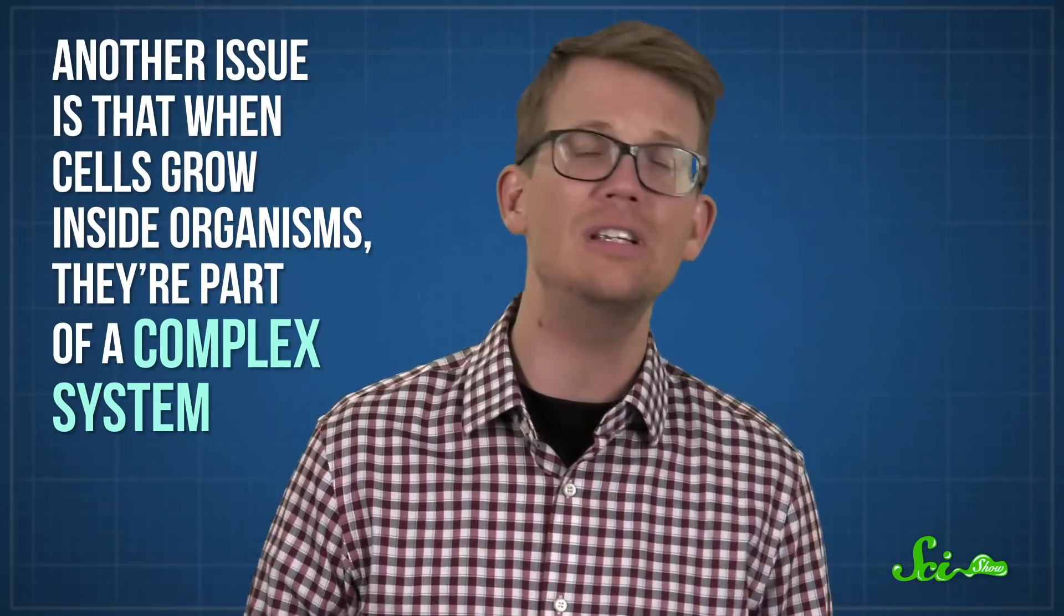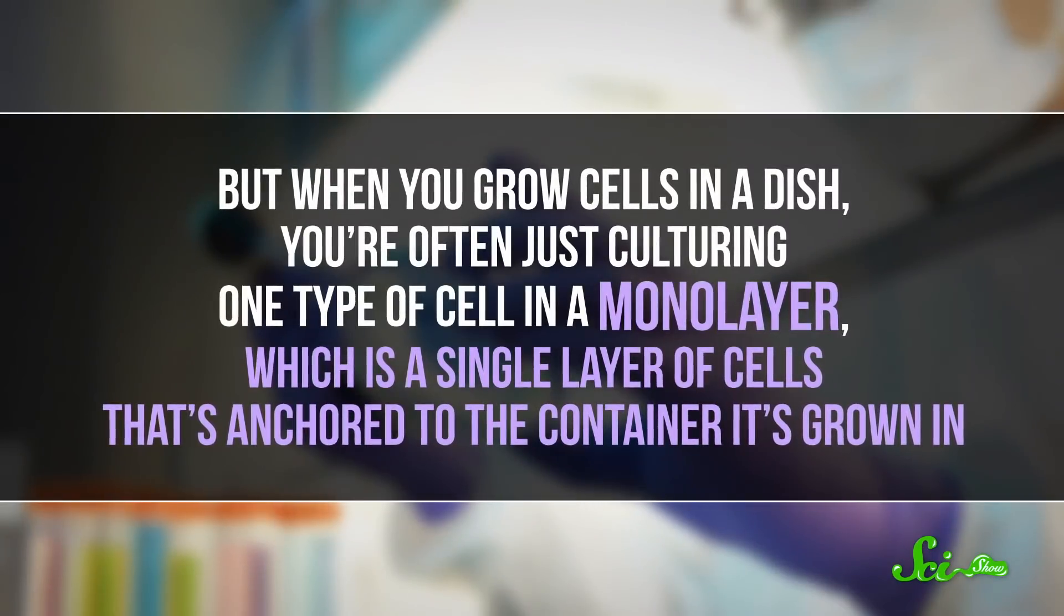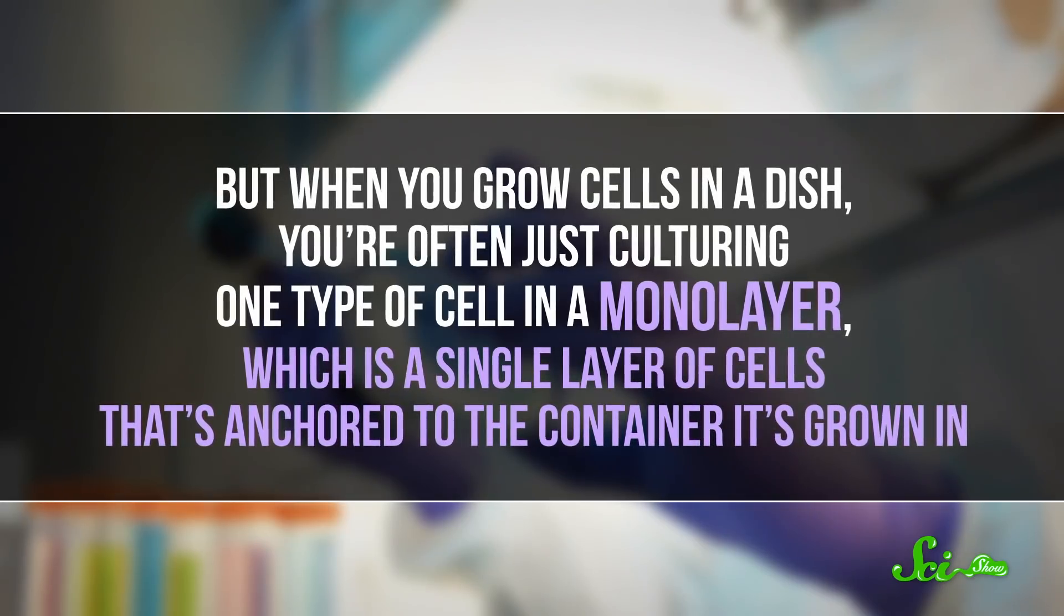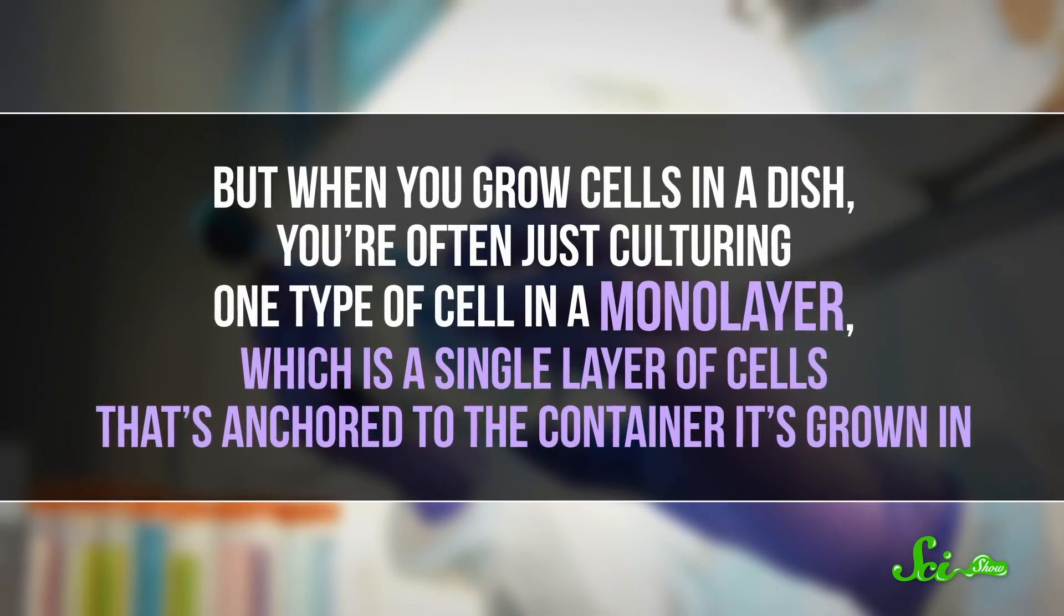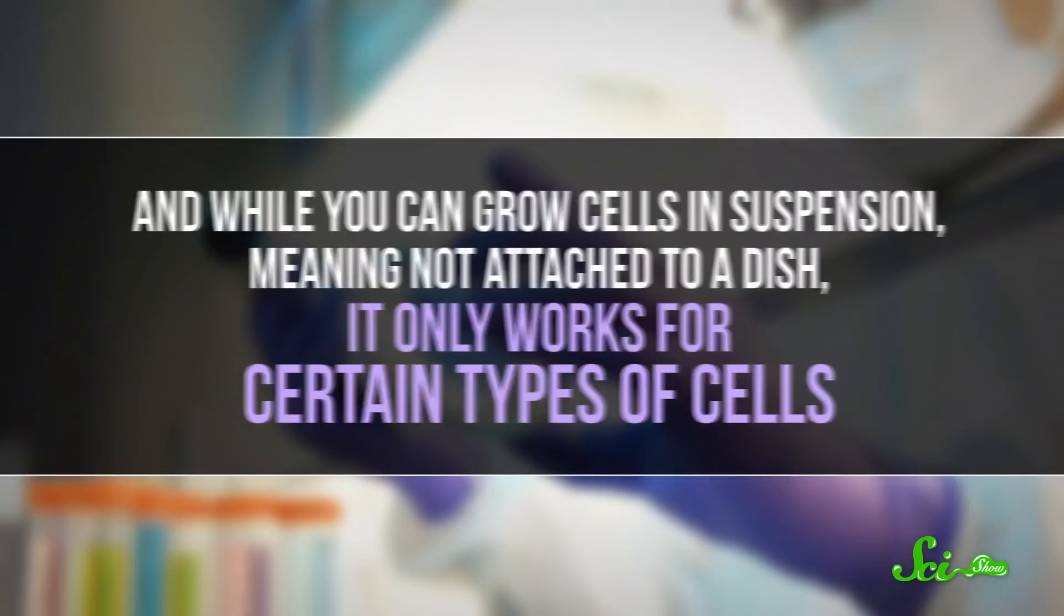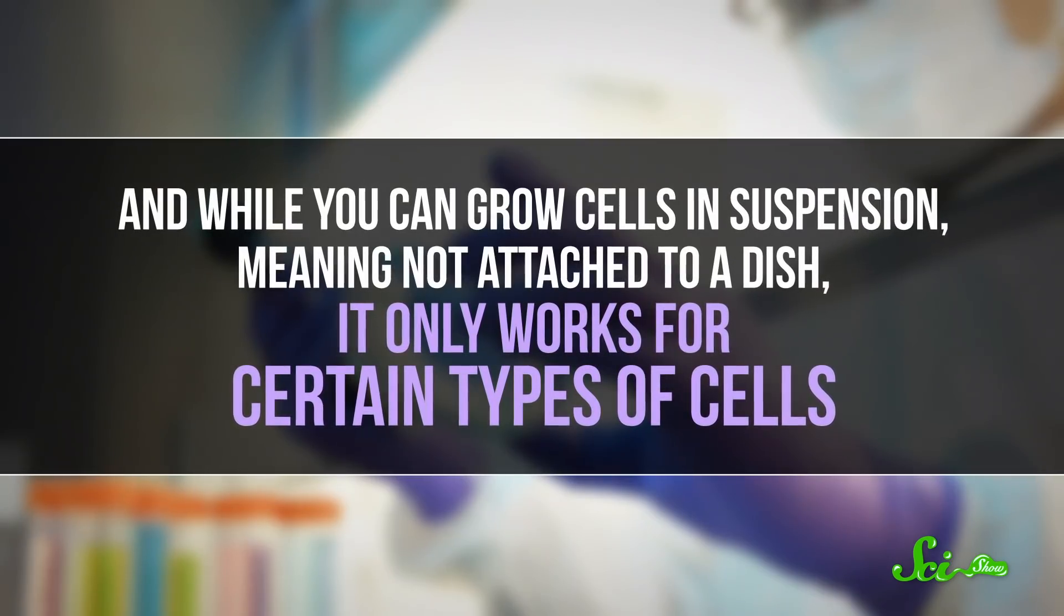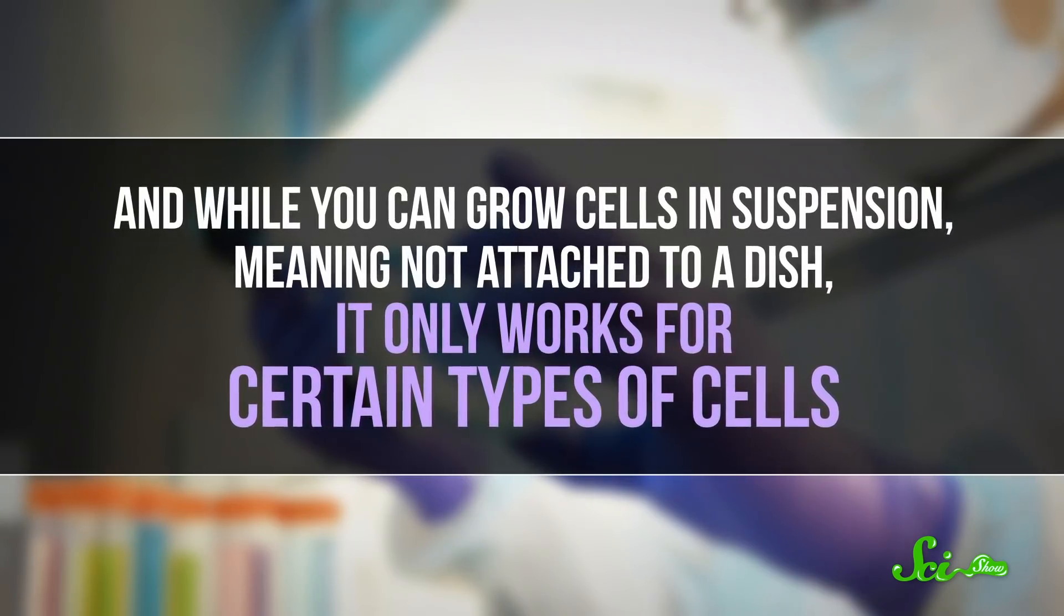They're surrounded by other cells and proteins and tissues in a three-dimensional environment. But when you grow cells in a dish, you're often just culturing one type of cell in a monolayer, which is a single layer of cells that's anchored to the container it's grown in. And while you can grow cells in suspension, meaning not attached to a dish, it only works for certain types of cells.